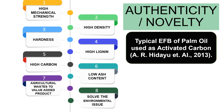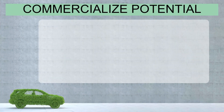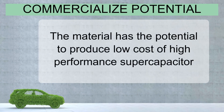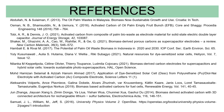The AC from palm oil waste also features high carbon and low ash content, converting agricultural wastes into value-added products, solving environmental issues. It has great commercialization potential and shows great promise as an option for high-performance energy storage derived from activated carbon, capable of producing low-cost, high-performance supercapacitors. List of references. Thank you.